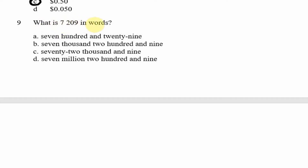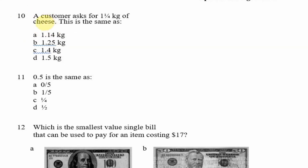Question 9: What is this figure in words? This figure reads as seven thousand, two hundred and nine. We look for that in words, and option B gives us seven thousand two hundred and nine. So option B is the answer.